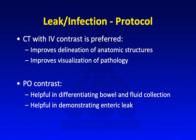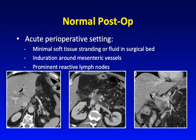In the leak or infection protocol, CT with IV contrast is preferred because it improves delineation of anatomic structures and visualization of pathology. PO contrast helps differentiate bowel versus fluid collection and demonstrates an enteric leak. In the normal post-op setting a few days after surgery, it's expected to see a minimal amount of soft tissue stranding and fluid in the surgical bed — such as this example after a Whipple resection — along with a little induration around the mesenteric vessels and a few prominent reactive lymph nodes.